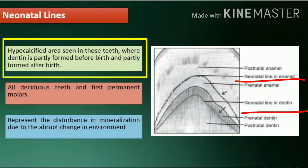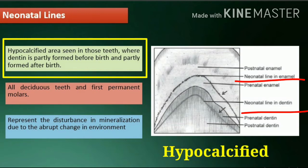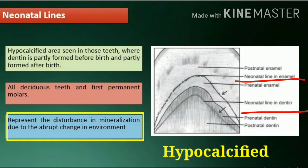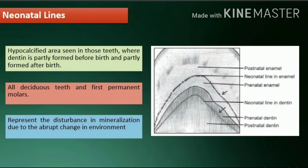Neonatal line: neonatal lines are hypocalcified areas represented by a wide contour line seen in those teeth where dentin is partly formed before birth and partly formed after birth. These are found in all deciduous teeth and first permanent molars. The neonatal lines represent the disturbance in mineralization due to the abrupt change in environment that occurs at birth.